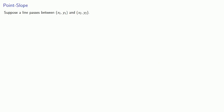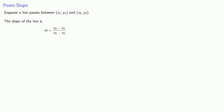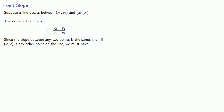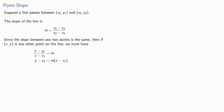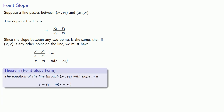Suppose a line passes between two known points; then the slope of the line can be determined by formula. Since the slope of any two points is the same, if xy is any other point on the line, the slope between xy and x1y1 must equal m. We multiply both sides by x minus x1 to get what's known as the point-slope form: y minus y1 equals m times the quantity x minus x1.